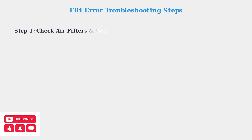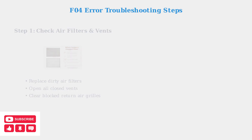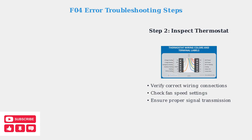When facing a Goodman F04 error, follow these systematic troubleshooting steps to identify and resolve the issue. Start with the most common cause: airflow restrictions. Check your air filters first, as dirty filters are the leading cause of F04 errors. Ensure all vents are open and return air grills are unobstructed. Next, examine your thermostat connections and settings, as loose wiring or incorrect fan speed settings can prevent proper communication with your HVAC system, triggering the F04 error.